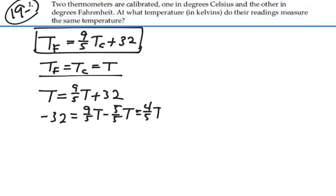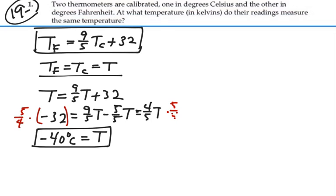We're going to multiply both sides by five-fourths, and we have that negative 40 degrees Celsius is equal to T, or even negative 40 degrees Fahrenheit is equal to T. So they're the same temperature.